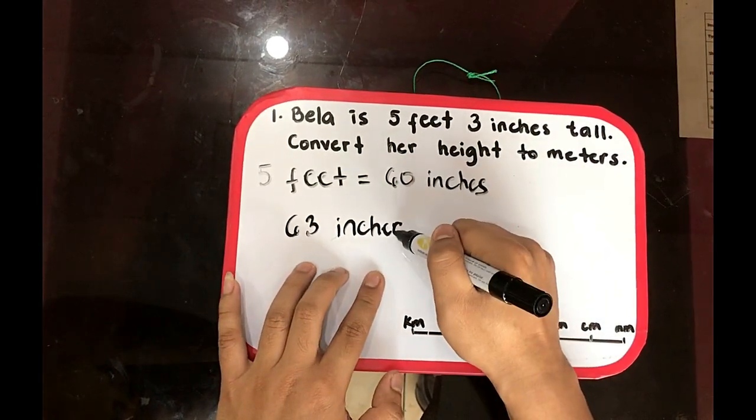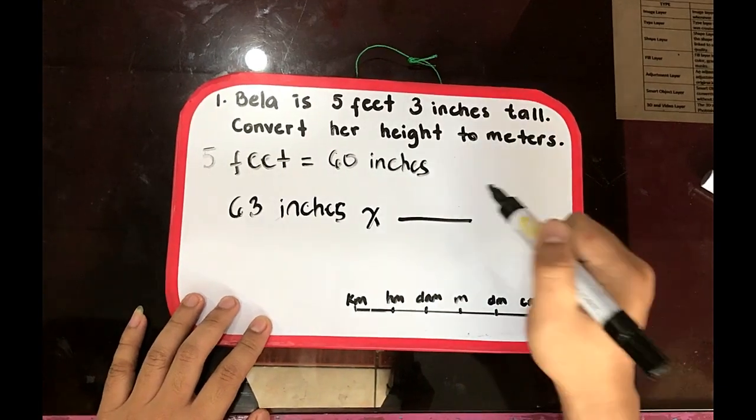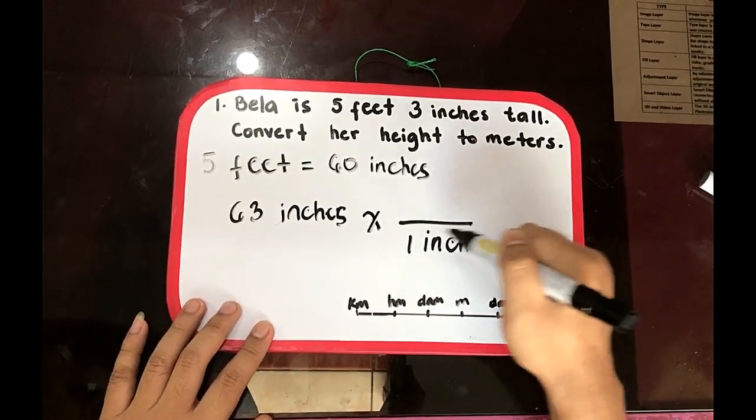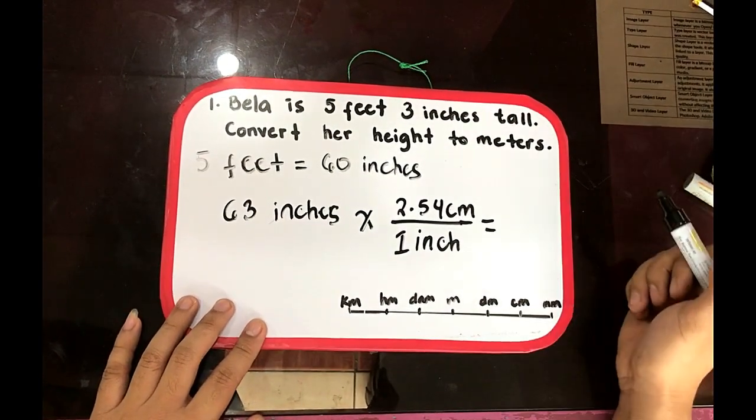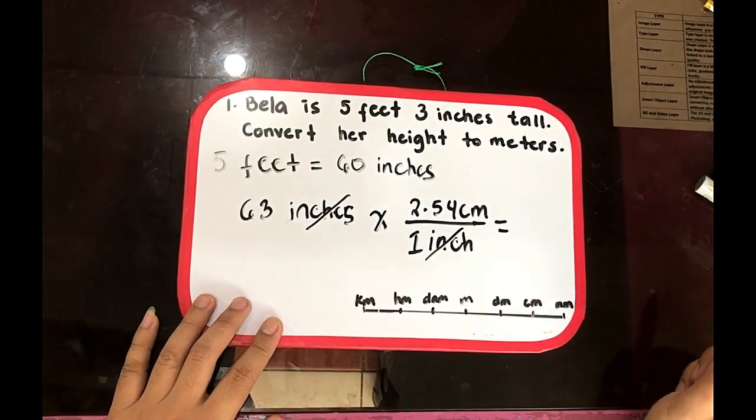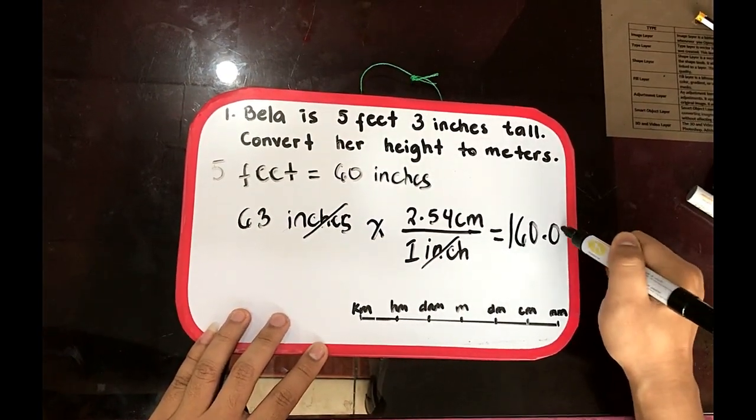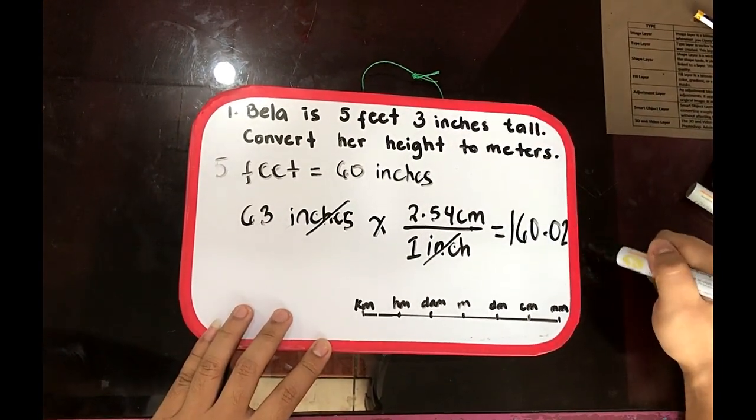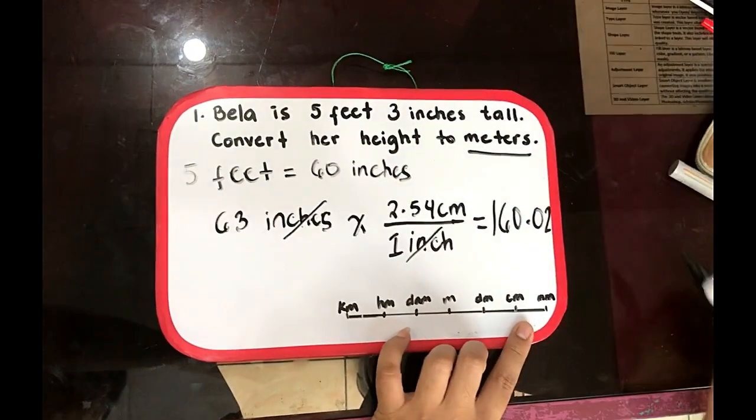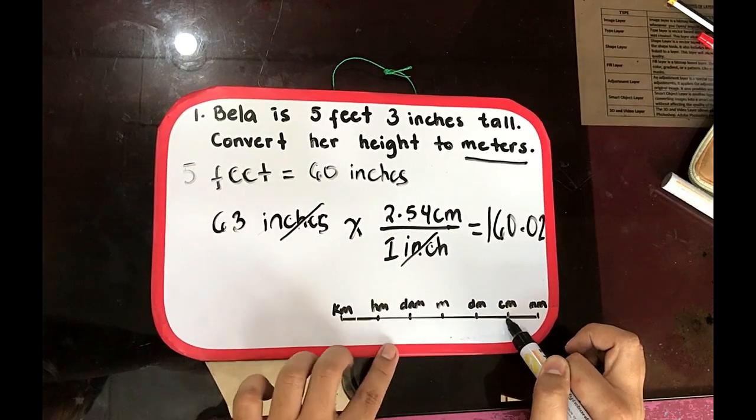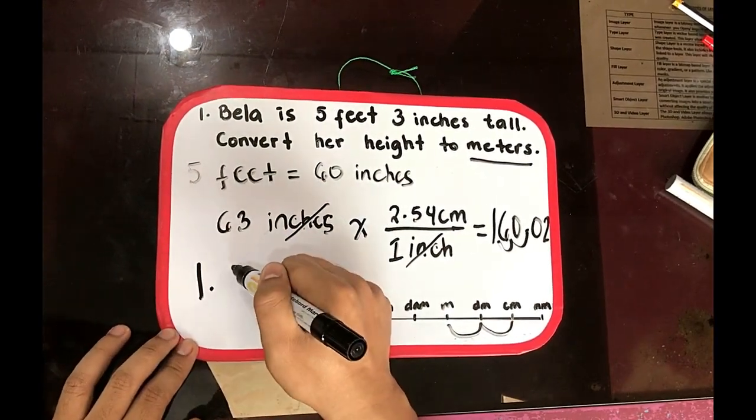Now this inches we're going to convert into meters. In our conversion, we know that 1 inch is equivalent to 2.54 cm. So we can now cancel inches. Multiply 63 times 2.54 will give us 160.02 cm. Now we have the conversion, we need a unit of meters. So cm, we're going to move 2 to the left. So the answer is 1.6 meters.